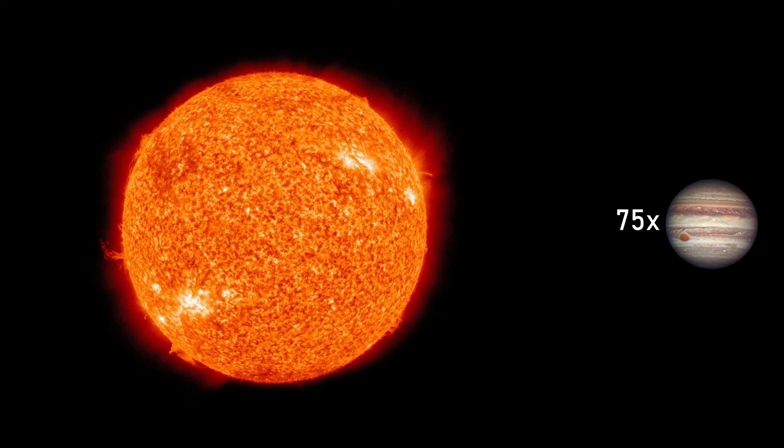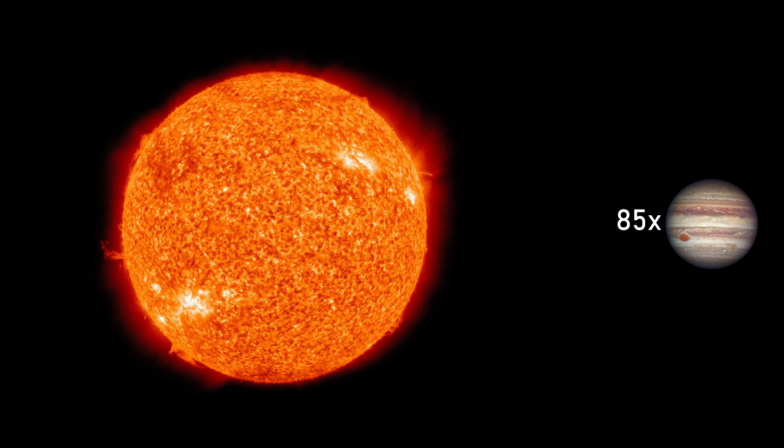This is only theoretical though, with one of the smallest stars ever recorded, catchily named EBLM J055557AB, being just 85 times the mass of Jupiter, or 8% of the mass of the Sun.